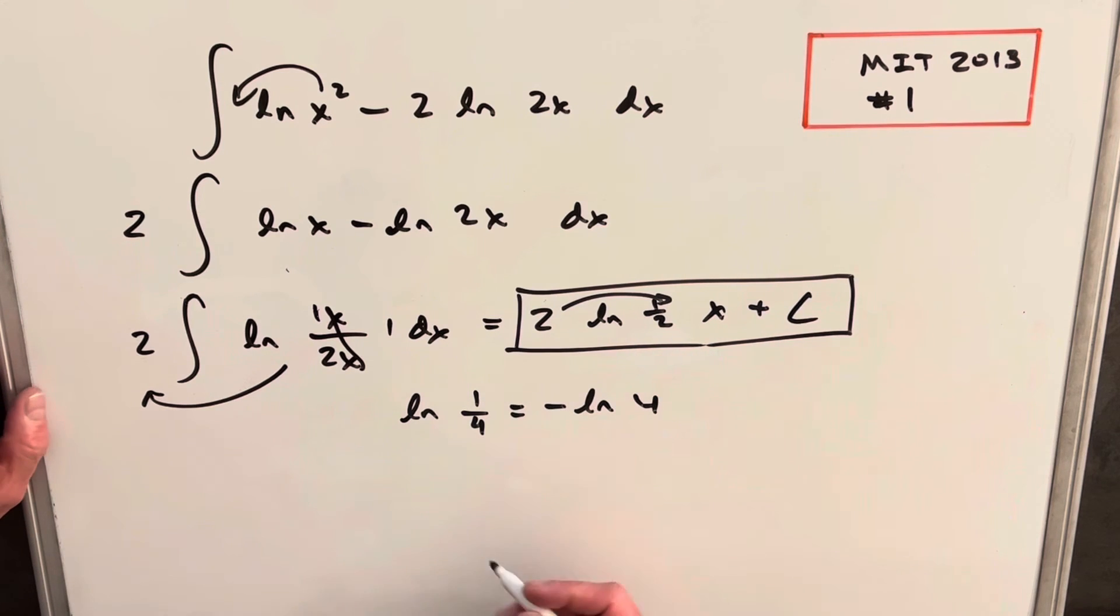So if I write this as minus ln 4, I can write my final solution as minus x ln 4 plus c, and that's it.